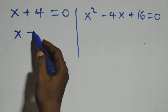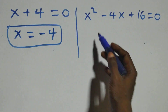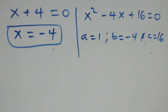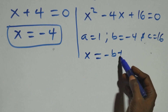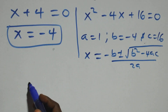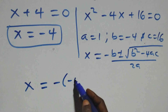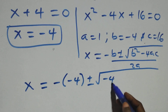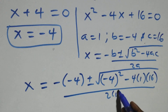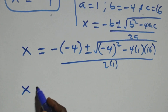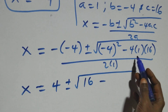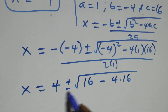Solving on this side, we have x equals to minus 4, which is the only real solution here. And here we have a quadratic equation where a equals to 1, b equals to minus 4, and c equals to 16. Applying the quadratic formula x = (−b ± √(b² − 4ac)) / 2a, what we have becomes x = (4 ± √(4² − 4 × 1 × 16)) / (2 × 1).